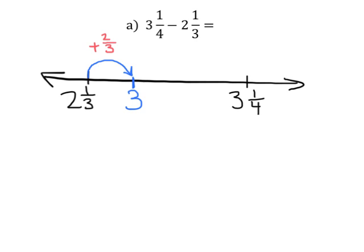And the way I do that is I would add 2/3 because 2 1/3 plus 2/3 bumps me up to 3. And then, what do I need to go, what do I need to add to go from 3 to 3 1/4? So I would need to add 1/4.